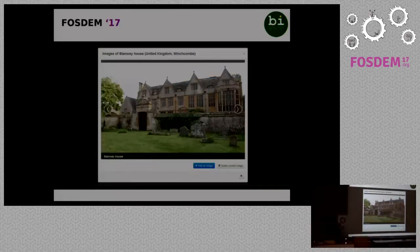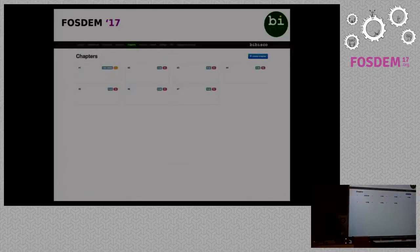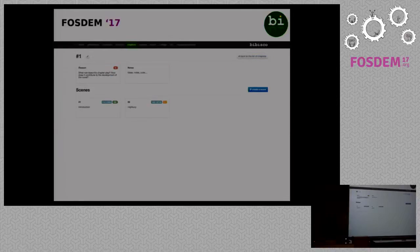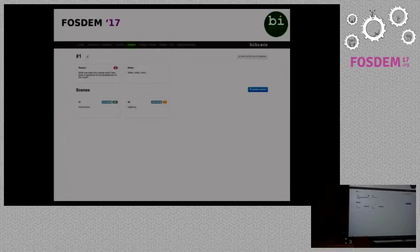In the location section, you can describe the locations of your novel, and you can attach images to every location. This is the chapter section. The chapter section contains the chapters of the novel, and every chapter has its card with its status flag and count badge. You can use drag and drop to reorganize chapters inside the novel. Inside a chapter detail view, you can find a card to indicate the main purpose of the chapter, and a card for notes. Then you can create the chapter by creating individual scenes. Every scene has its card with its status flag and word count badge. You can use drag and drop to reorganize scenes inside your chapter.